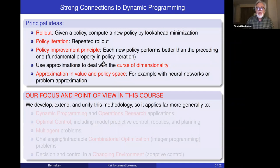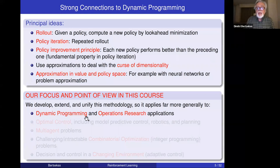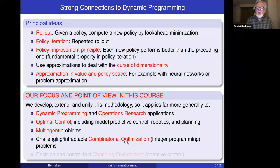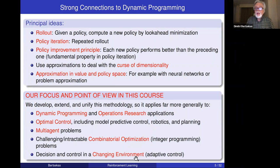This course has a focus and a point of view. It starts from AlphaZero and tries to develop and unify all the underlying methodology so that it applies far more generally — to general dynamic programming applications in operations research and industrial engineering, optimal control including model predictive control, robotics and planning, multi-agent problems, combinatorial optimization, and decision and control in a changing environment, which comes under the name of adaptive control. All of these ideas connect around all of these applications in a unified way.